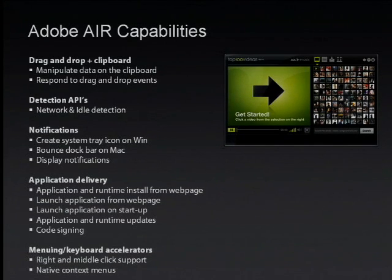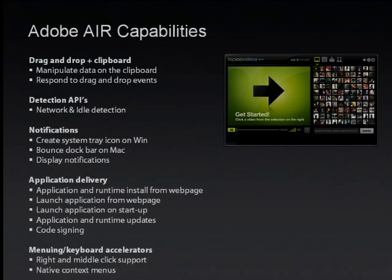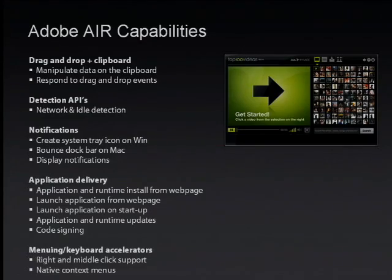Just like any desktop application, these apps can integrate with drag and drop between other applications like Excel or the desktop, and you have access to the local clipboard. We've also added less common integration capabilities, including the ability to detect network transitions—so if the network cable is yanked or plugged back in, the application can get an event and adapt. You can also integrate with system notification mechanisms, like the system tray on Windows and bouncing the dock on Mac.